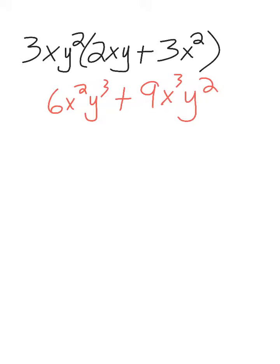We're going to go from the red back to the black. So first thing we're going to do is factor all of this stuff completely. 6 can be 2 times 3. Expand your x's, your y's. Do the same thing on the second term.